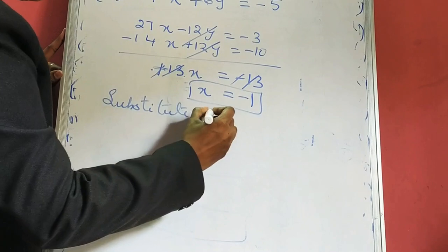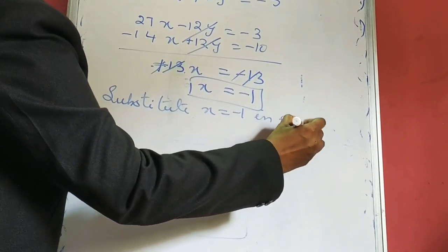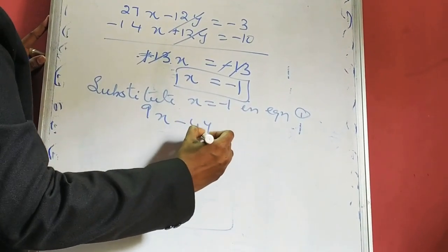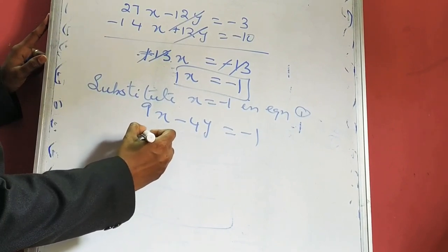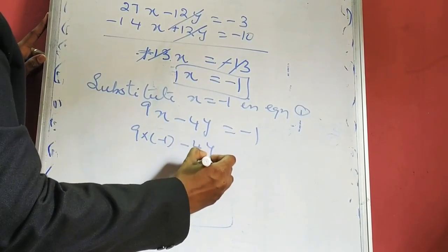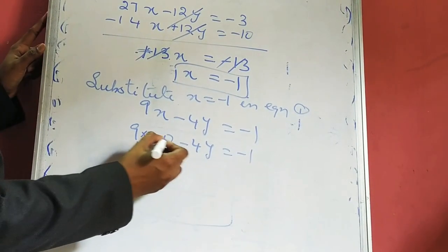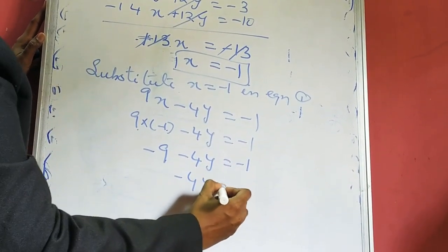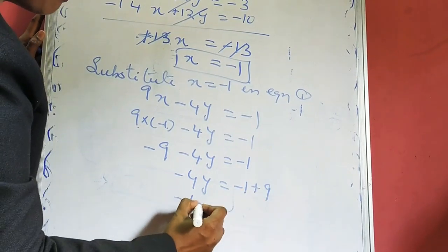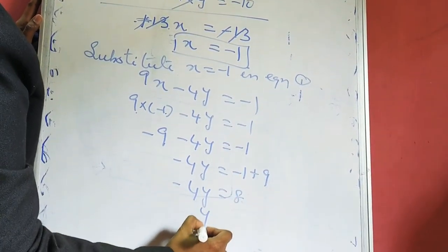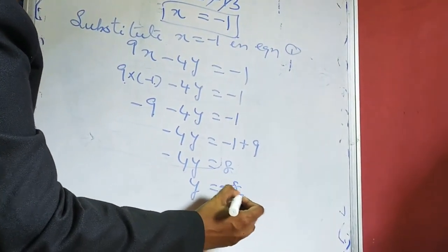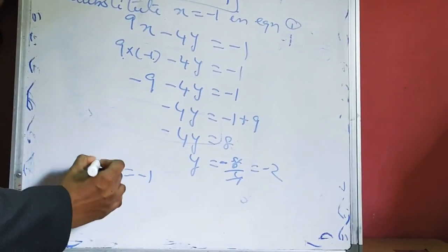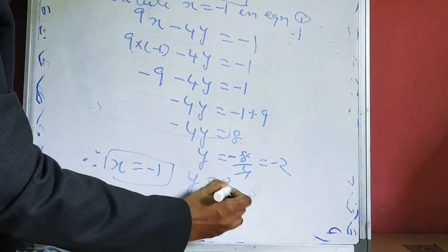Substituting x equals minus 1 into equation 1: 9x minus 4y equals minus 1. So 9 into minus 1 minus 4y equals minus 1, giving minus 9 minus 4y equals minus 1. Therefore minus 4y equals minus 1 plus 9 equals 8, so y equals minus 8 by 4 equals minus 2. Therefore x equals minus 1 and y equals minus 2.